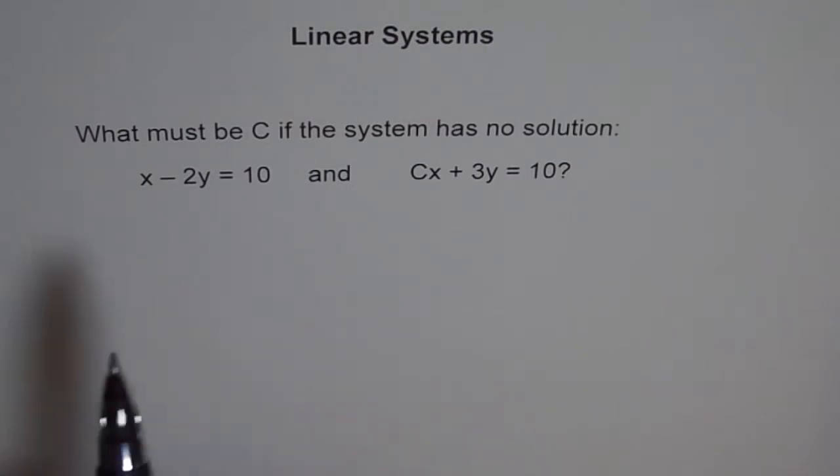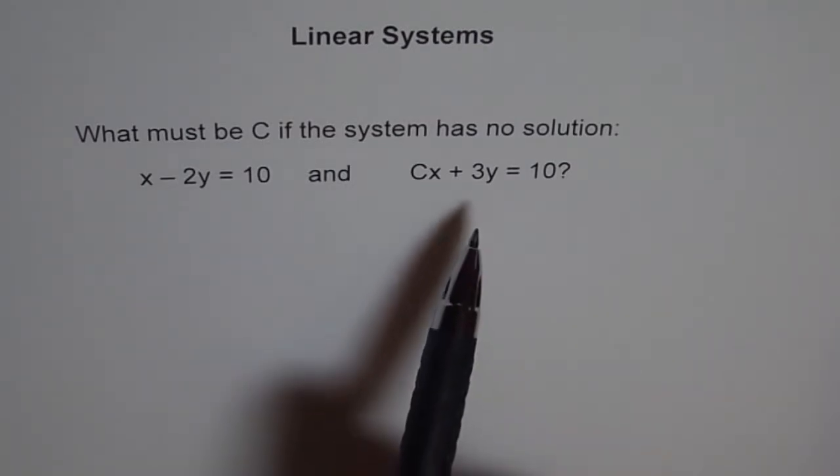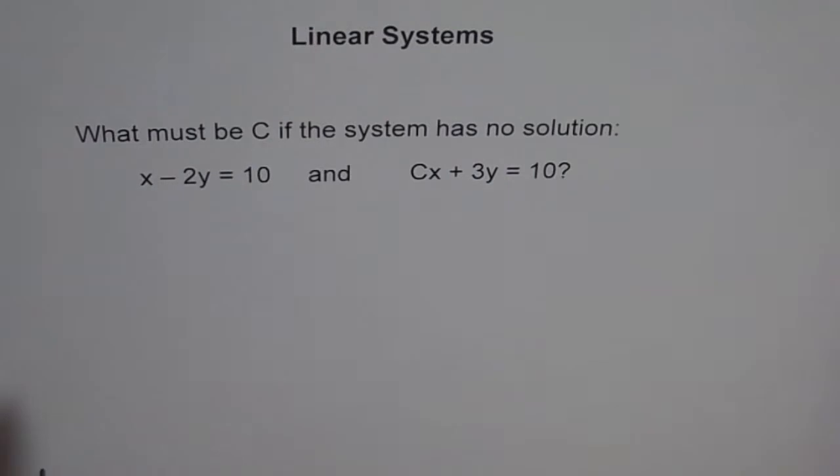Well, if a system has no solution, it means that the two lines are parallel and they have different y-intercepts. That is important. So we are looking for parallel lines with different y-intercepts. If the y-intercept is not different, if it is the same, then they are going to intersect at all the points and we will have infinite solutions.